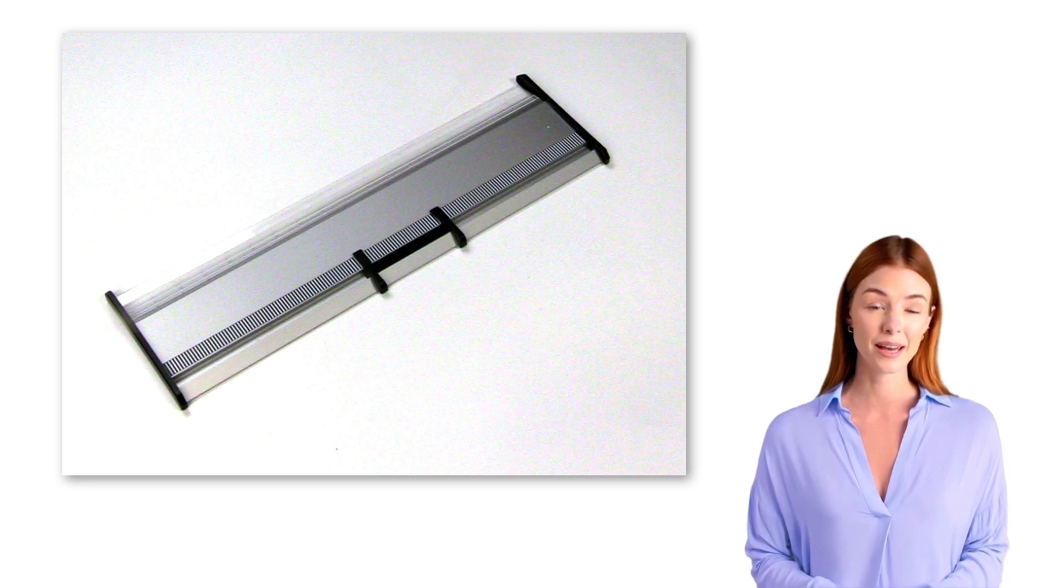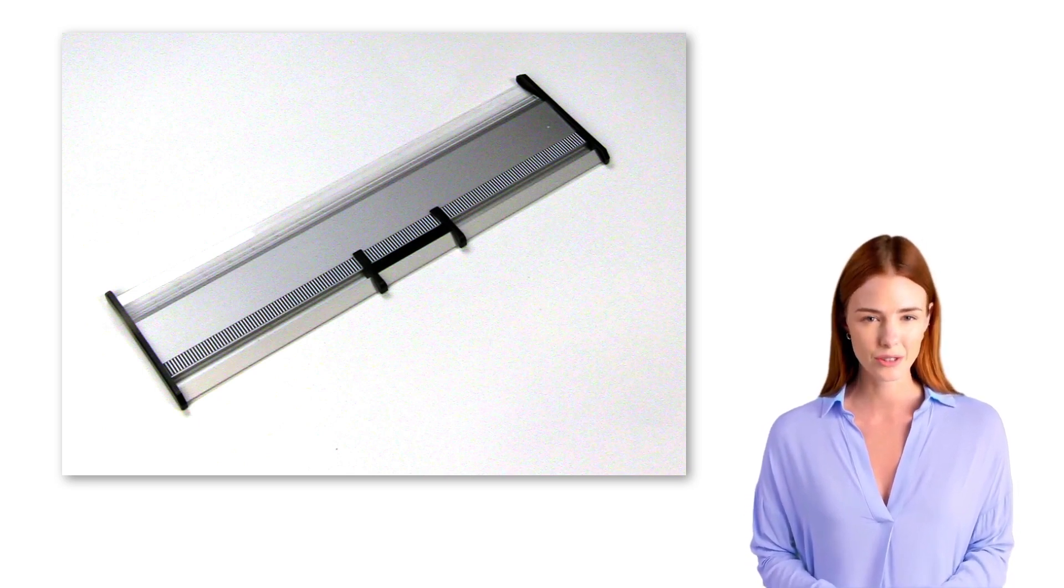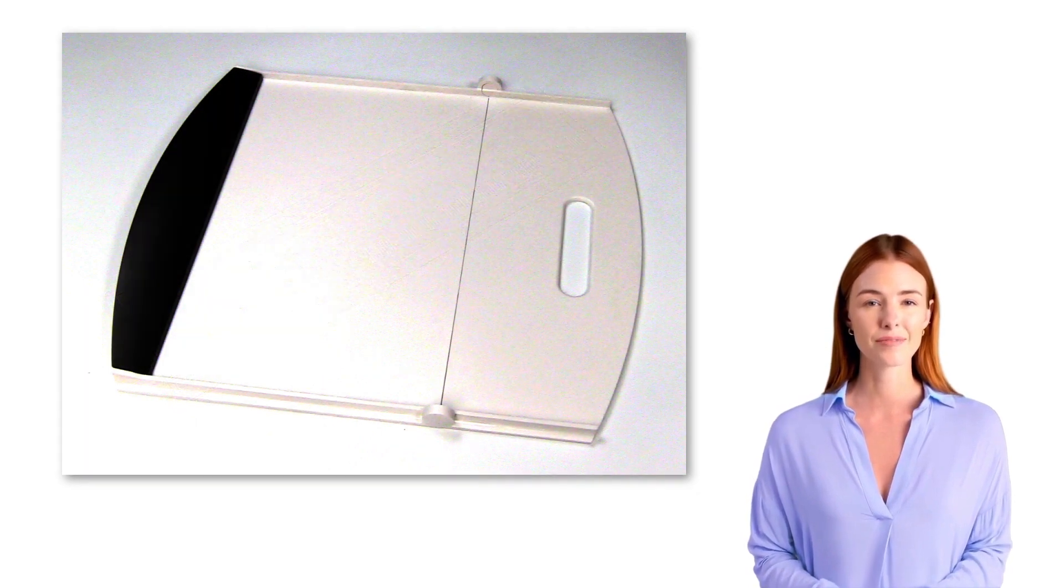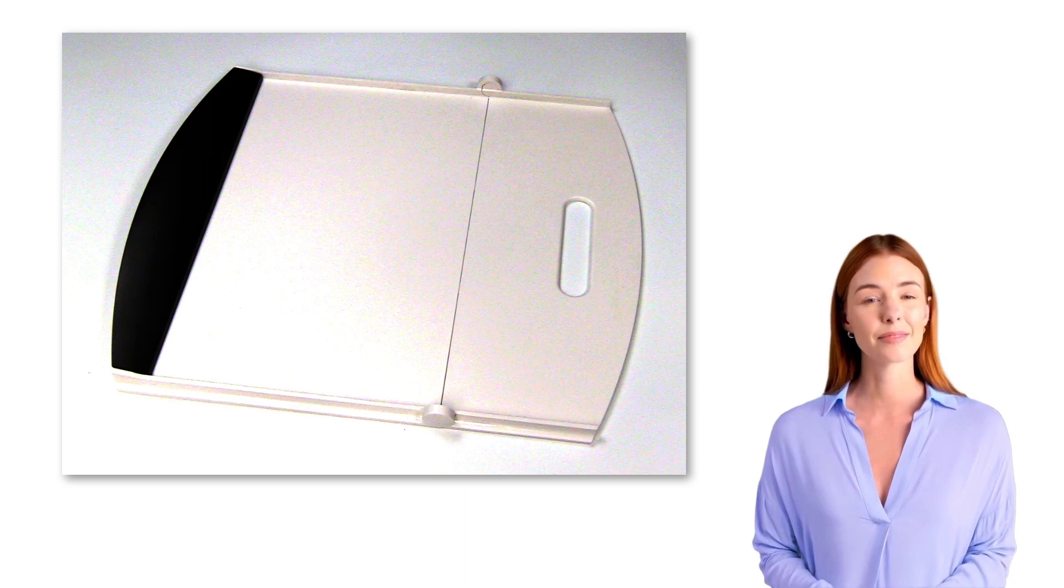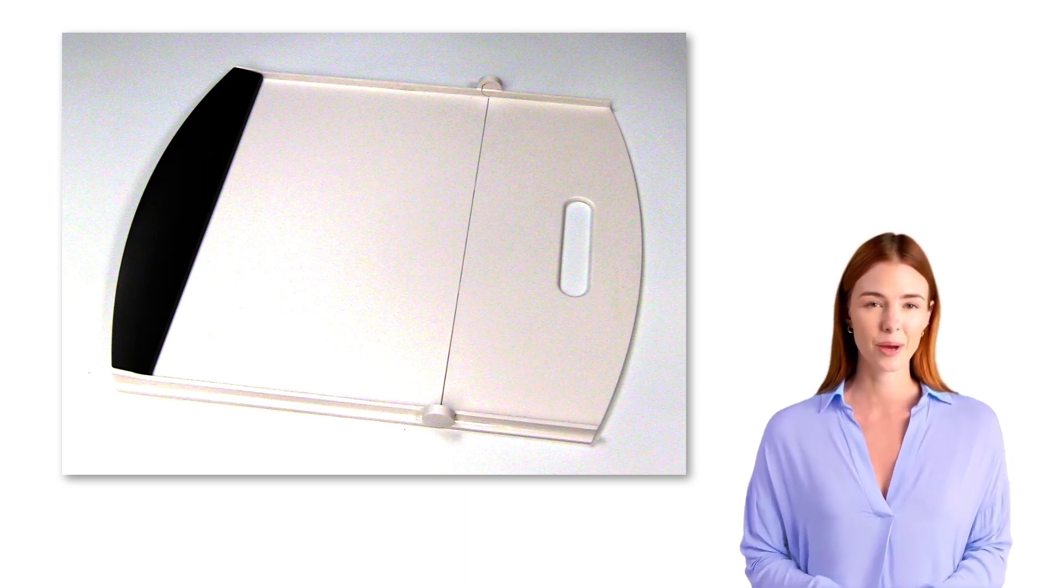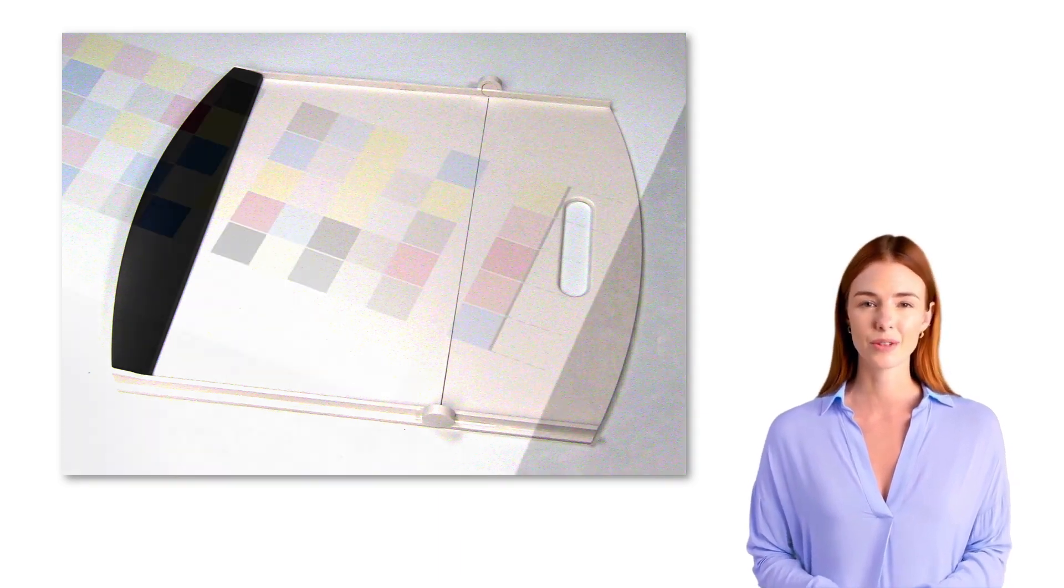The measuring ruler helps ensure that the instrument is positioned correctly to take accurate measurements. In addition, it is strongly advised that you use the supplied backer board to hold your printed charts. Although the backer board looks like simple white plastic, it provides an ISO compliant white background for more accurate measurements.